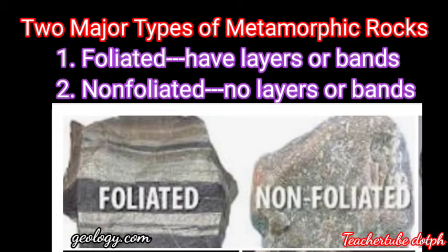There are two major types of metamorphic rocks. One is called foliated rocks — these are rocks that have layers or bands. In the image below you can see the foliated and the non-foliated rocks.